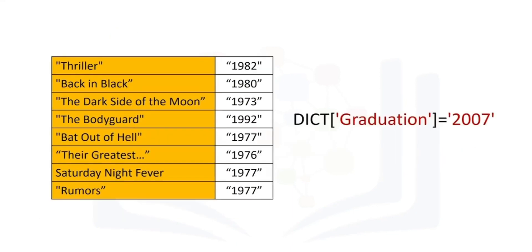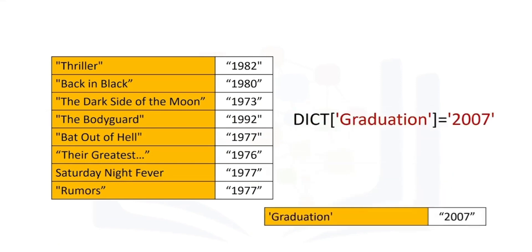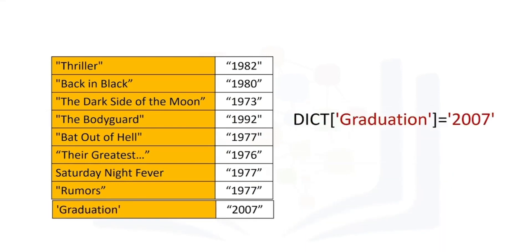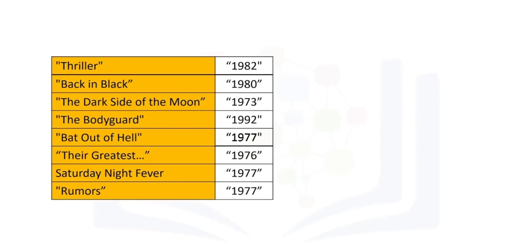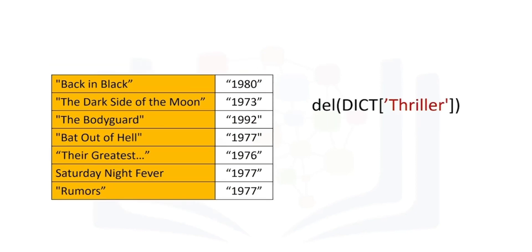We can add a new entry to the dictionary as follows. This will add the value 2007 with a new key called 'Graduation'. We can delete an entry as follows — this gets rid of the key 'Thriller' and its value.